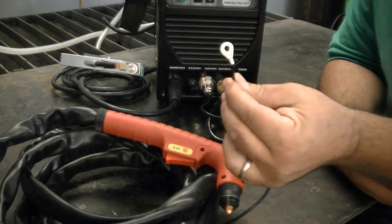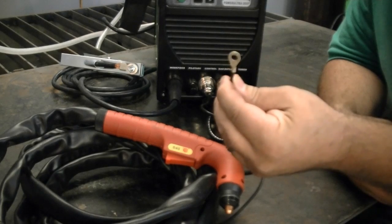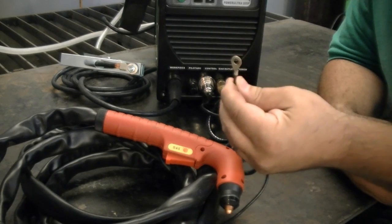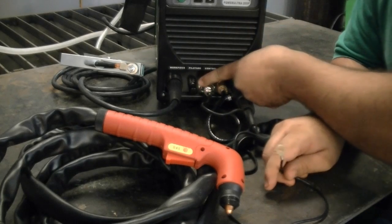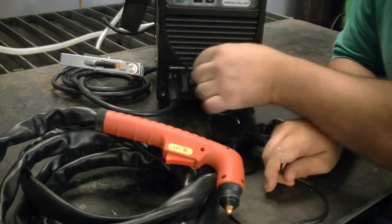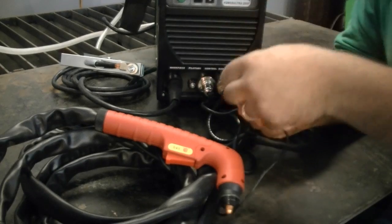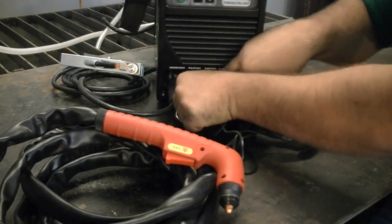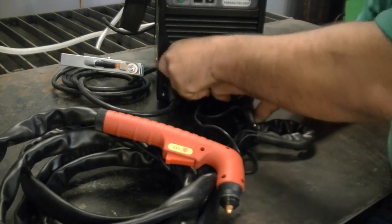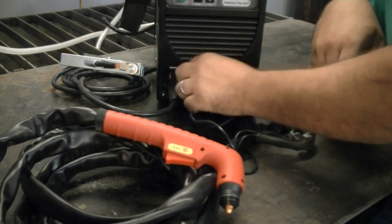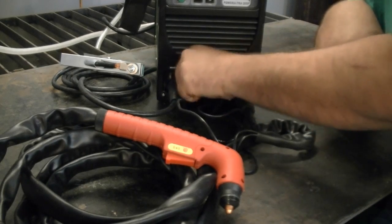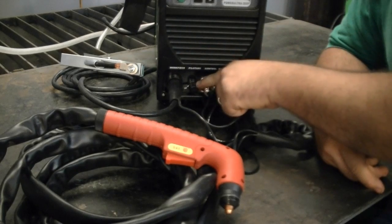Last but not least, we have the pilot arc wire. This is very important to the operation of these units, so don't forget to connect it. You've got a thumb screw right here where it says pilot arc. Simply unscrew it, insert the wire onto the post, and tighten the thumb screw up until it's tight. Make sure it's snug. Don't over tighten the plastic nut.